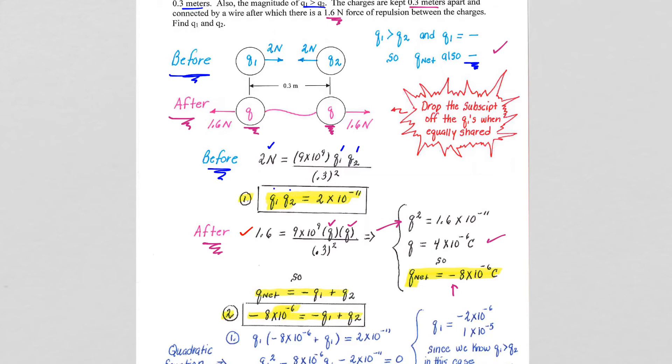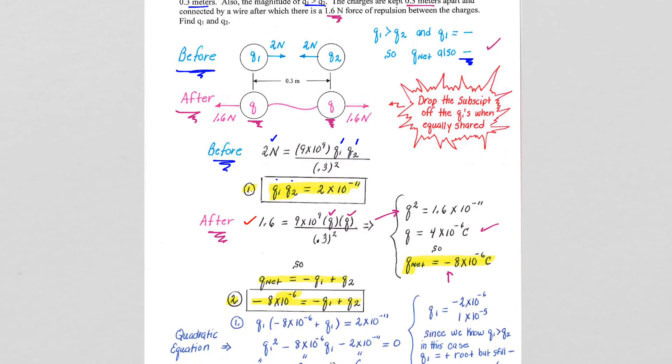Ultimately, as you can see here, we are going to use Q net to go back and relate it to Q1 and Q2. So we take our Q net and relate it back to Q1 and Q2 with the appropriate signs.